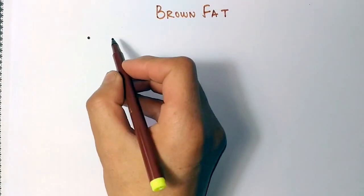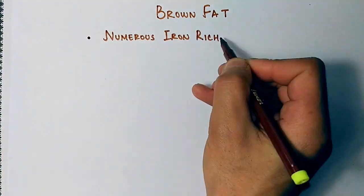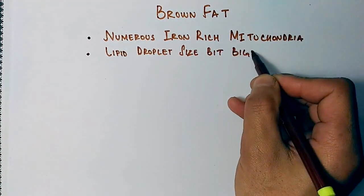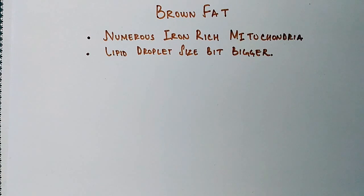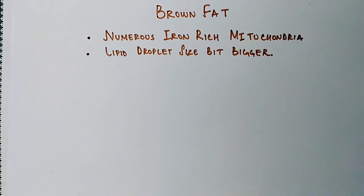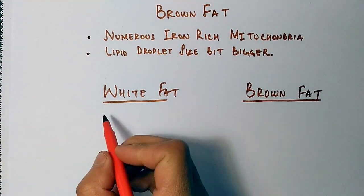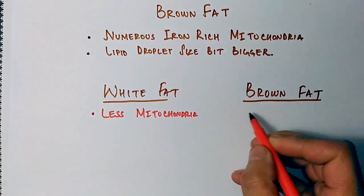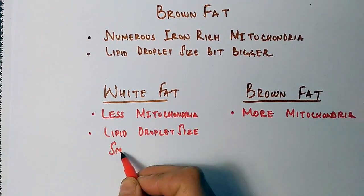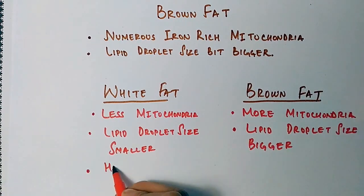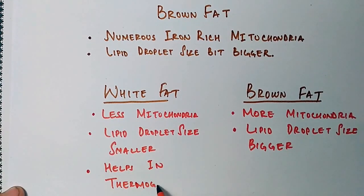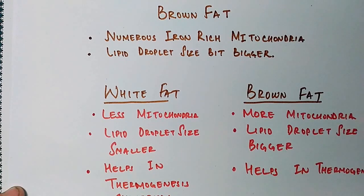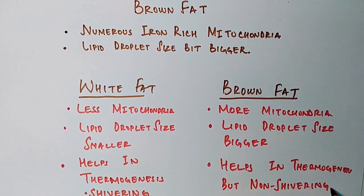Now let's see how brown fat is different from white fat. Brown fat has numerous iron-rich mitochondria, and its lipid droplet size is much bigger than in white fat — that's why it appears brownish in color. In white fat there is less mitochondria and smaller lipid droplets, while brown fat has more mitochondria and bigger lipid droplets. White fat helps in thermogenesis during shivering, while brown fat helps in thermogenesis in the case of the non-shivering process.